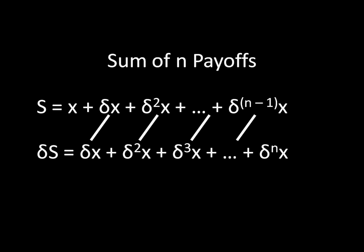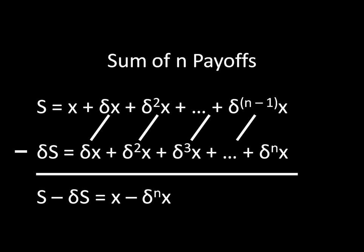Imagine that we subtract the left side of the first equation from the left side of the second equation, and the right side from the right side. Essentially, we're doing something that looks like this. Well, this preserves the equality. Because delta times S is equal to delta times x, plus delta squared times x, and so forth, all the way through delta to the n times x.